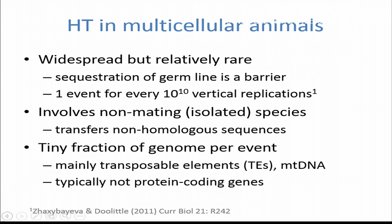Horizontal transfer usually in multicellular animals has to do with species that are so distantly related they wouldn't even normally hybridize. This implies that the sequences being transferred between species are non-homologous. In addition, the amount of DNA transferred in any one of these events is a very small fraction of the genome, and typically it's transposable elements or mitochondrial DNA as opposed to protein-coding genes. So this is a very rare process.